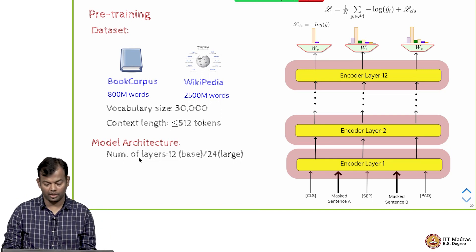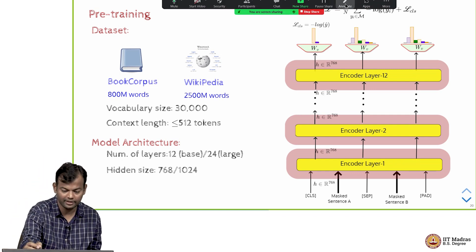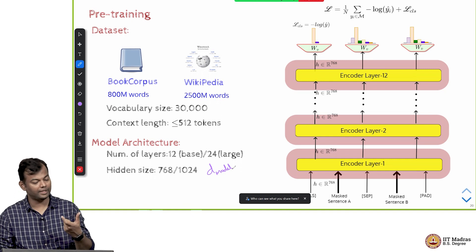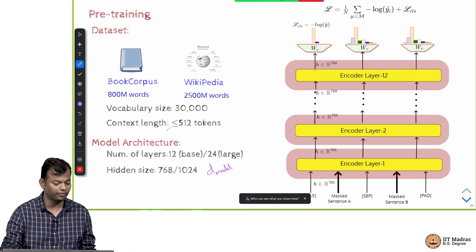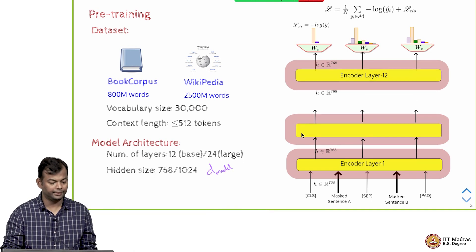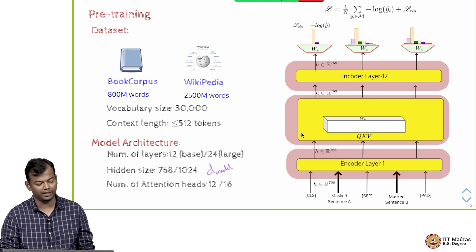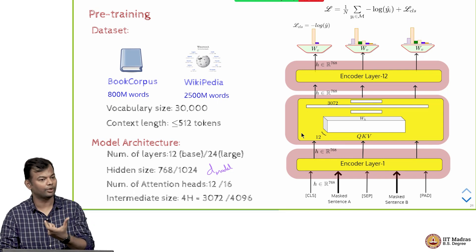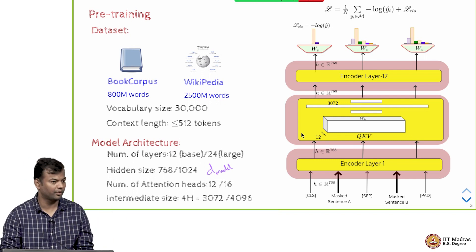The base version had 12 layers, the large version had 24 layers. The hidden size, which means the d_model, that also varied. The smaller one, the base one, had only 768 dimensional embedding and the large one had 1024 dimensional embedding, and the number of attention heads was 12 and 16 respectively. The feed forward network hidden layer is 4 times the size of d_model, so it was either 3072 if it was 768 or 4096 if it was 1024.